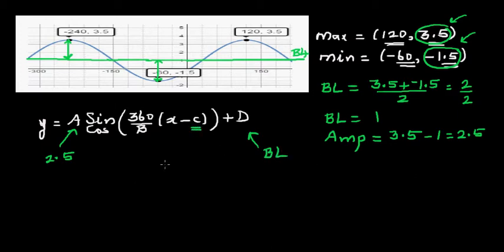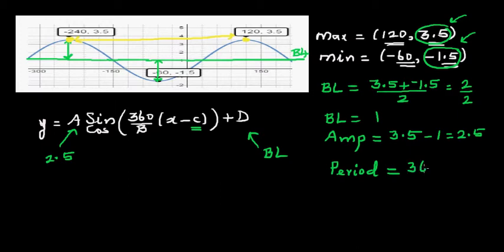Now we need to find b, the period. The period is the horizontal distance from one point to the successive equivalent next point — also called the wavelength. From −240 to 0 is 240, and from 0 to 120 is 120, giving a total period of 360.